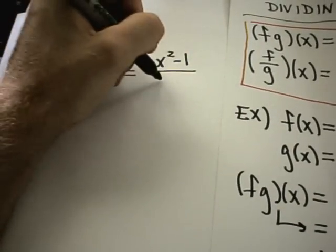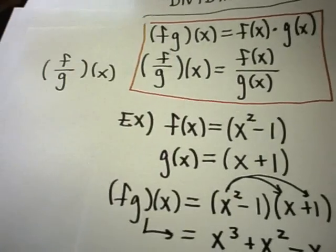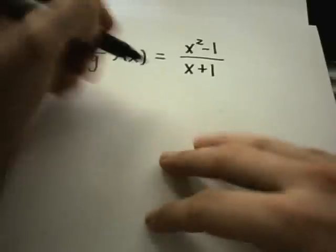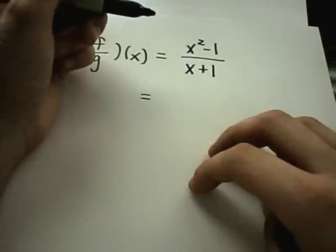And g of x is the one that's going to go on the bottom. And g of x again is x plus 1. So I'll put that one down there. And now, this is f of x divided by g of x.